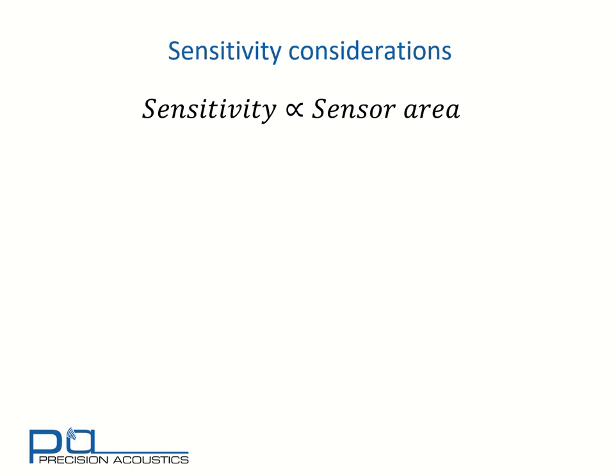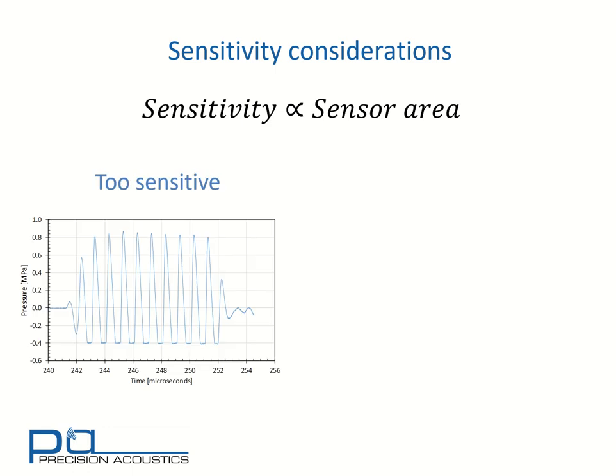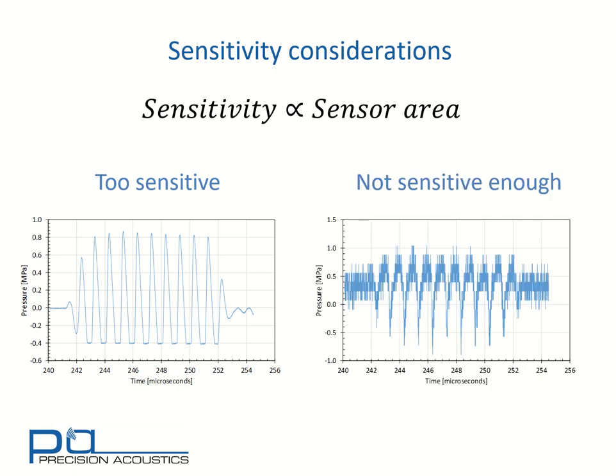Generally speaking, sensitivity is proportional to sensor area. When a hydrophone is too sensitive relative to the field being measured, saturation can occur. This can clearly be seen from the clipping on the peak negative excursion of the waveform shown on the left hand side. Similarly, when we have insufficient sensitivity, we can have a noise limited measurement, where noise is masking the underpinning acoustic signal.